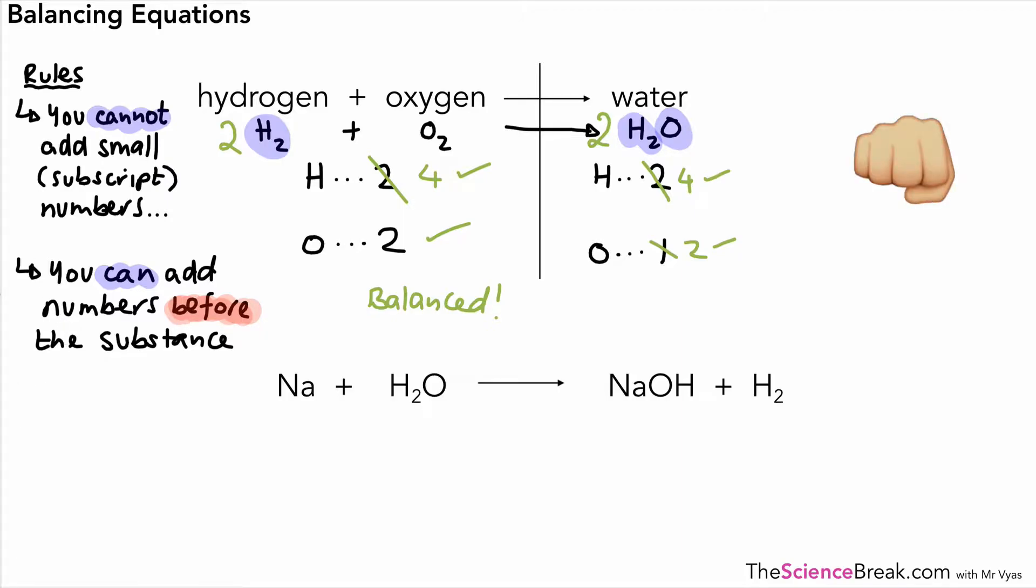Okay so the second one is slightly more involved, slightly trickier but the method is the same. So we put in a line to separate left and right and we list out the elements. So we've got Na, we've got H and we've got O. And remember you must have the same elements on both sides. If you don't, there's something wrong. So Na, I'm going to put H next and O just so that they're in the same order. Makes it a bit easier to organize. And for Na we have 1, H we have 2, remember that 2 applies to the hydrogen, and we have 1 oxygen.